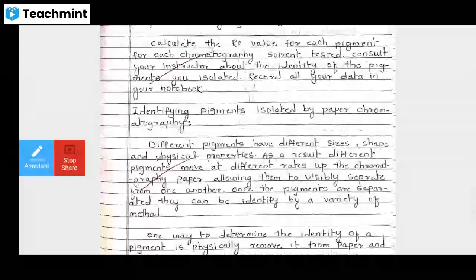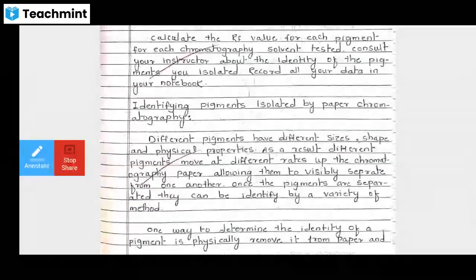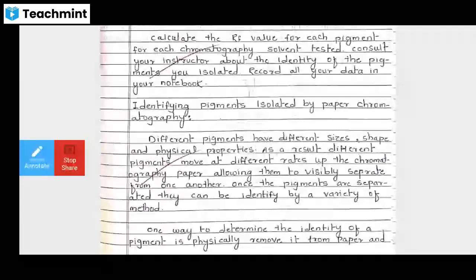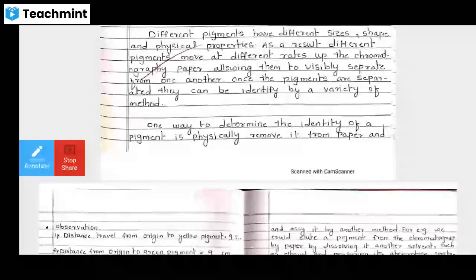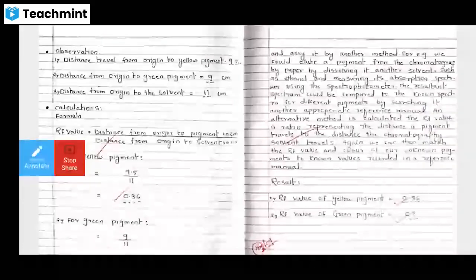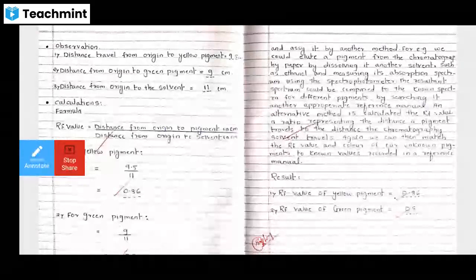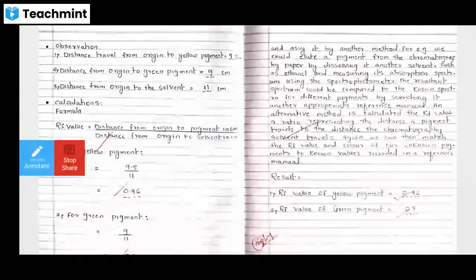Identify and calculate the Rf value. For each pigment, measure the distance traveled. Different pigments have different size, shape, and physical properties, and as a result, different pigments move at different rates. Each pigment has its own Rf value. We have three pigments with three different distances.